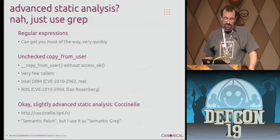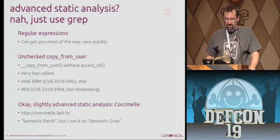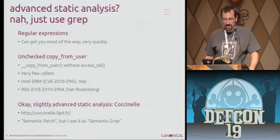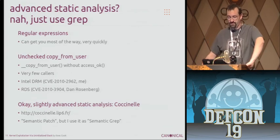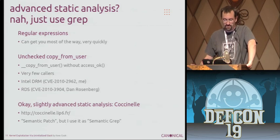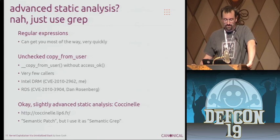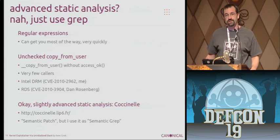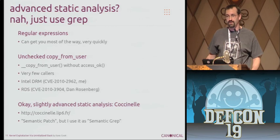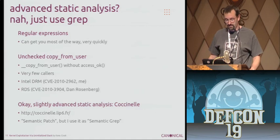There's a version of copy_from_user that does not perform access checks at all. There were very few callers of that, and one of them was in Intel DRM, another in RDS. But with standard copy_from_user, I thought I should go a little beyond standard regular expressions. So I started looking at a tool called Coccinelle, which is traditionally used for semantic patching — for example, patching a behavior across a source tree. But I was really using it for semantic grep.